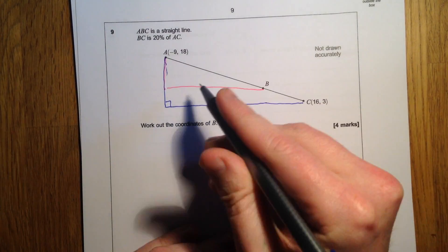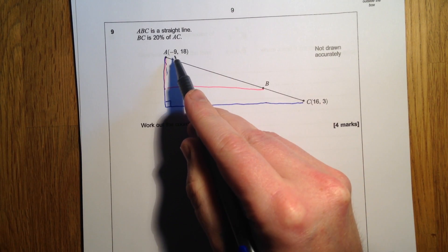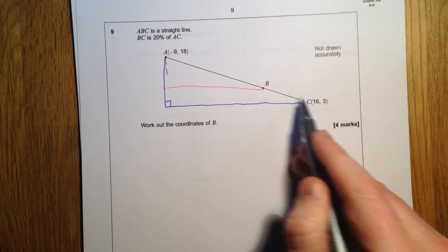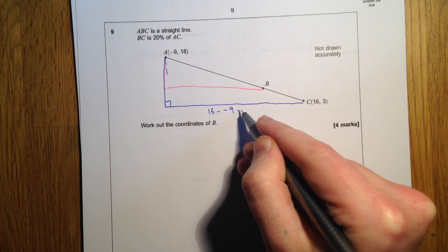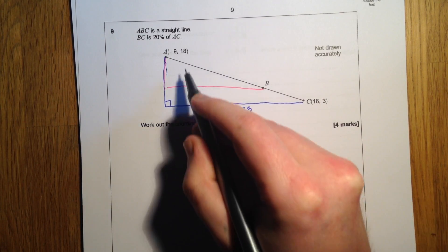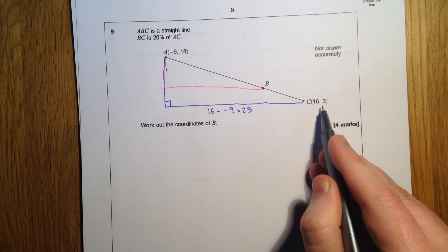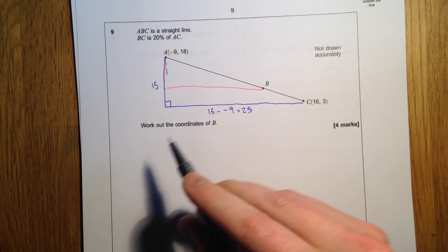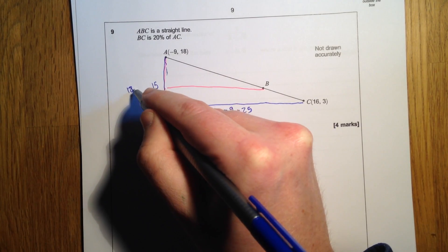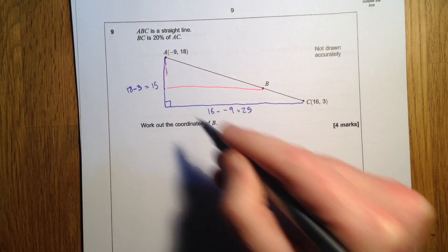So looking at the x-coordinates, we've got negative 9 and we've got 16, so the difference between these, 16 take away negative 9 is 25. The difference between these two, 18 and 3 is 15, so that's 18 take away 3 is 15.